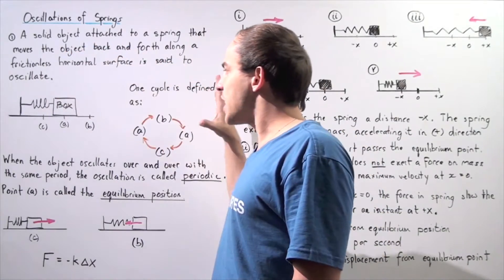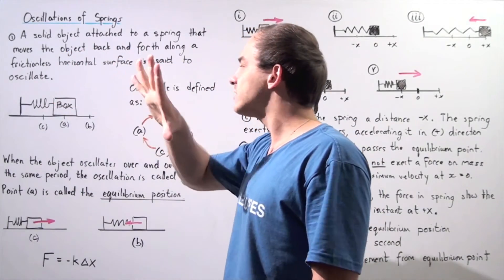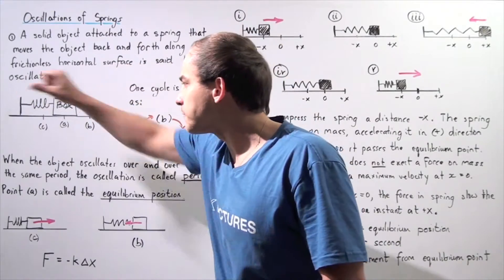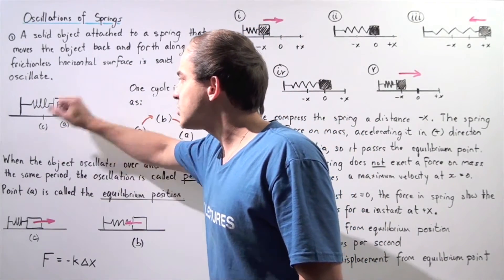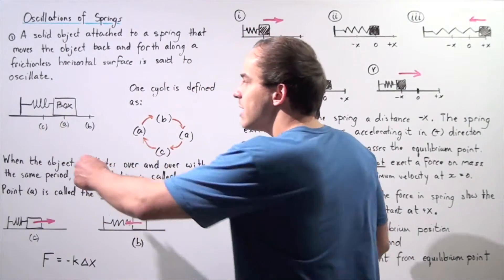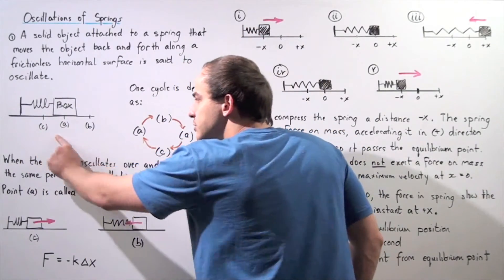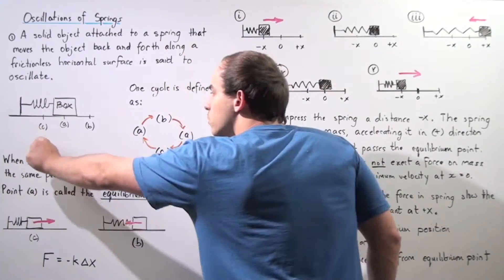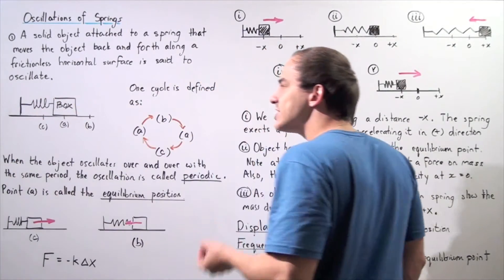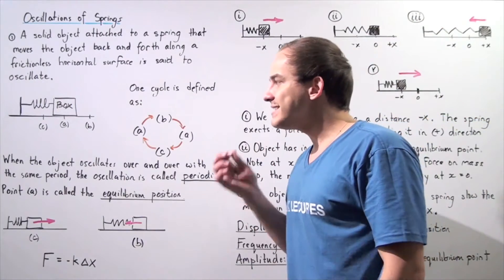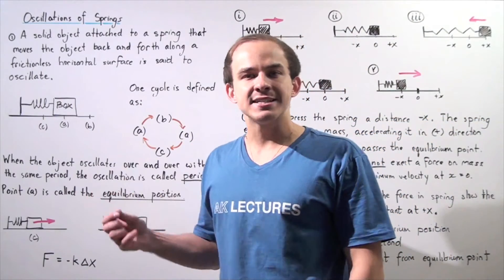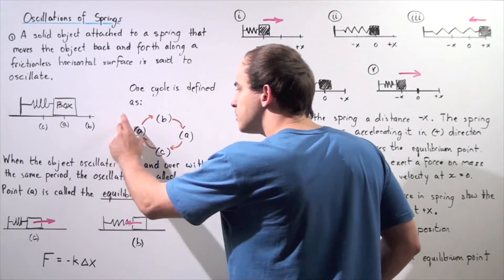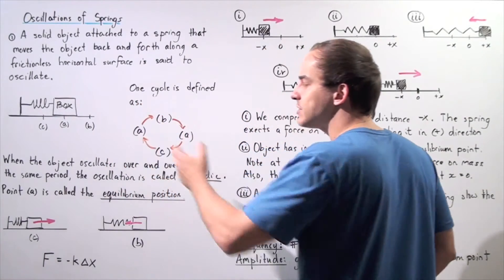Now let's suppose I compress my spring to point C and let go. If the surface is frictionless, the object will oscillate back and forth forever. Beginning at point C, the object will travel to point A, then to point B, back to point A, and back to point C — its initial position. This full oscillation is known as one cycle, and the period is simply how many seconds it takes for the object to complete one full cycle.